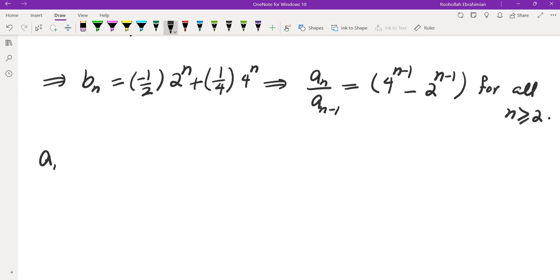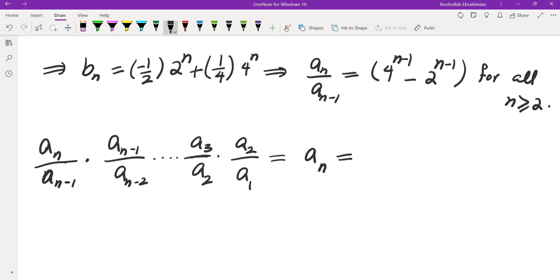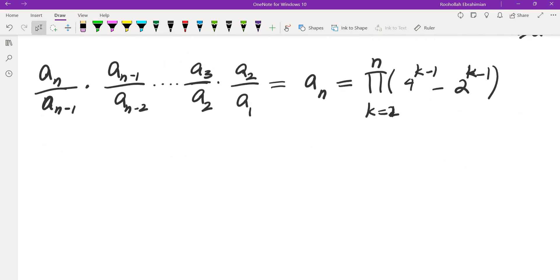So that means An over An-1, the ratio is in fact 4 to the n-1 minus 2 to the n-1 for all n starting from 2. It means An over An-1 multiplied by An-1 over An-2 multiplied by A3 over A2 multiplied by A2 over A1. So An is going to be, this product is of course An because they telescope and A1 is 1, but it's also equal to the product of 4 to the power of k-1 minus 2 to the power of k-1 and that's k ranges from 2 to n. So this is the formula for An. What we just showed is that An is in fact just that expression. So now we need to show that n divides that expression.